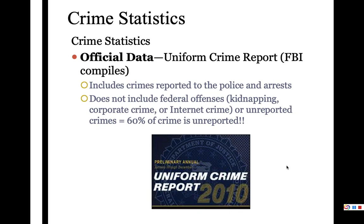I want to talk a little bit about two sources of crime statistics. This chapter is really rich, and I'm not going to have time to cover everything in it, but it is very interesting. If you want to get into more detail, I definitely recommend taking a look at some of the concepts in the book, like the panopticon and surveillance and control through that way. But for now, I just want to explain that crime statistics are always some sort of an estimate — we don't count every single crime, of course, because so much goes unreported.